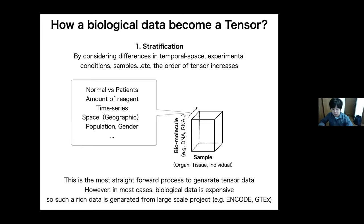How does biological data become a tensor? The first way to generate tensor is stratification. By considering the differences in temporal space, experimental conditions, and samples, the order of tensor increases. This is the simplest process to generate tensor data. However, in most cases, biological data is expensive. Such rich data is typically generated from large-scale projects such as ENCODE or GTEx.